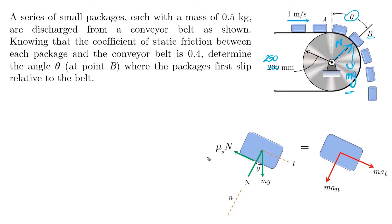Since the velocity is constant at 1 meter per second, the tangential acceleration will be 0, but the normal acceleration will be v² over ρ, which is 1² over 0.25 or 4 meters per second squared.